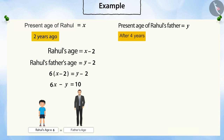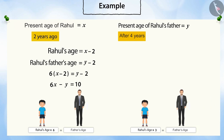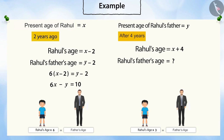Also, after four years, his father's age will be only three times that of Rahul's age. After four years, Rahul's age will be four years more than the present age, that is X plus four. And father's age will be Y plus four.